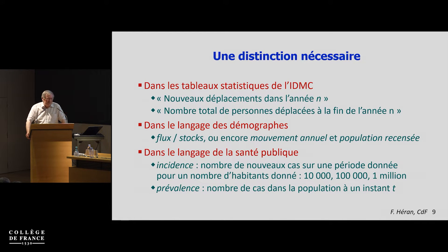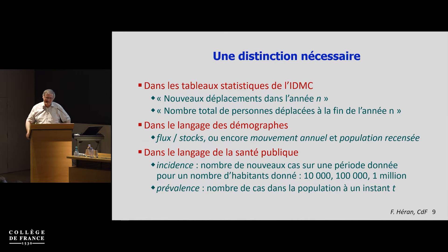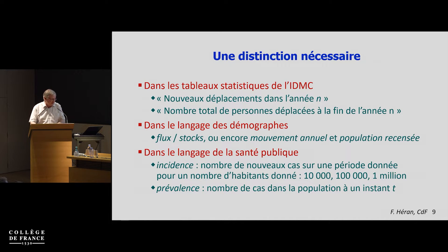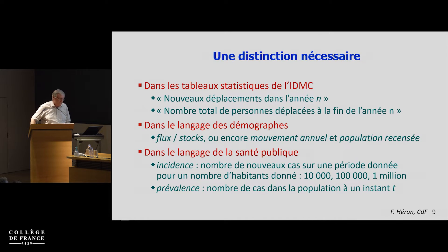If you have a look at their annual reports, it's not always easy to read, because as a demographer it is my feeling that you have to make a clear distinction — and the language they use is not very clear either. You have a statistic about the new displacement in year Y, but also a stock — a total number of persons displaced at the end of the year. This is exactly the equivalent of the distinction between flows and stocks in demography, or of course incidence and prevalence.